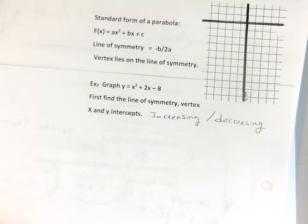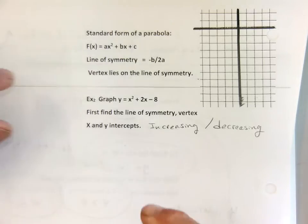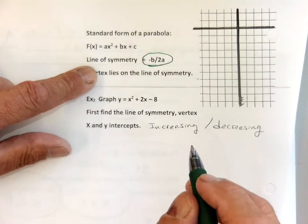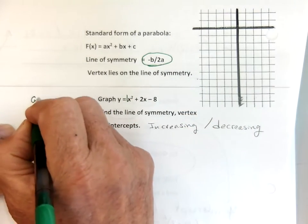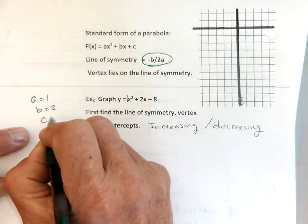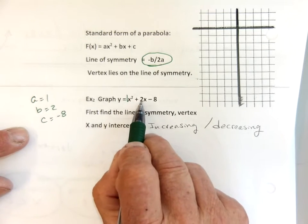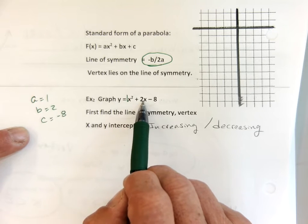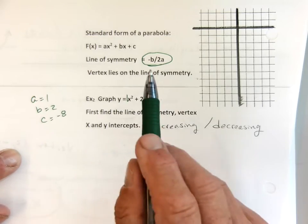Standard form of a parabola is a little bit harder — it takes more work, but we can do it. Here's my example: a is 1, b is 2, and c is negative 8. a is always the number in front of x squared, b is always the number in front of x, and c is the number on its own.